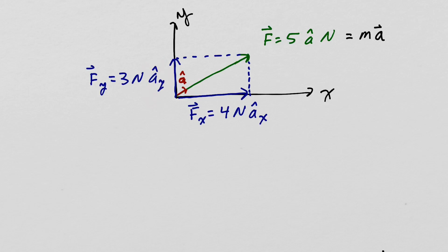You would find that you would get the same acceleration for the object if you simultaneously applied 4 newtons in the X direction and 3 newtons in the Y direction, as you did from applying 5 newtons in the A hat direction. That means FX plus FY is equivalent to F.